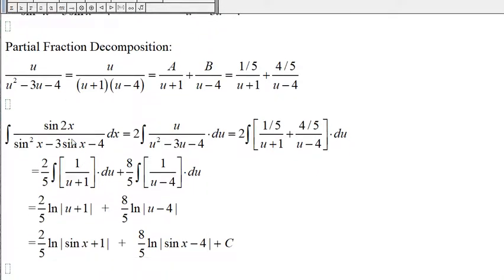And so the original integral is now 2 times 1 fifth over u plus 1 plus 4 fifths over u minus 4.